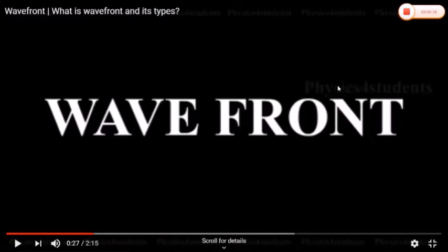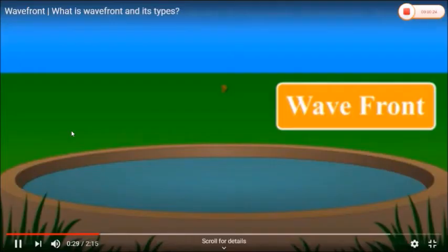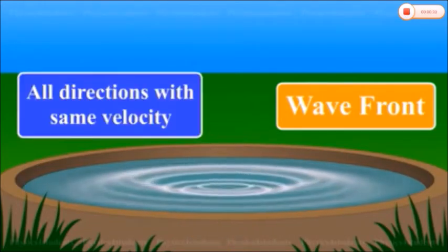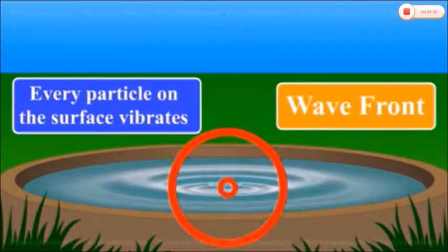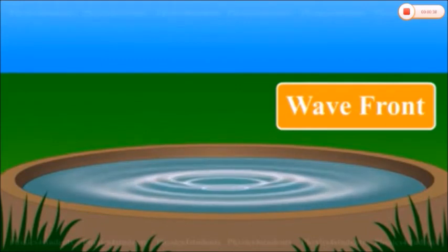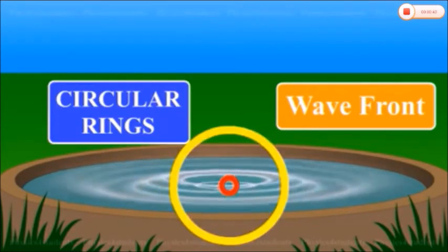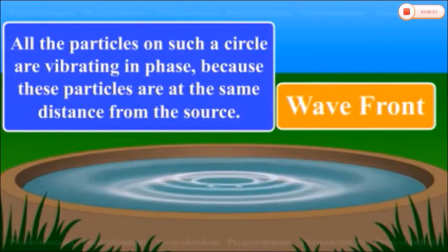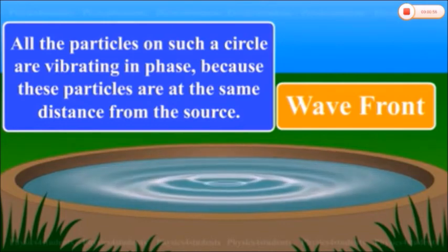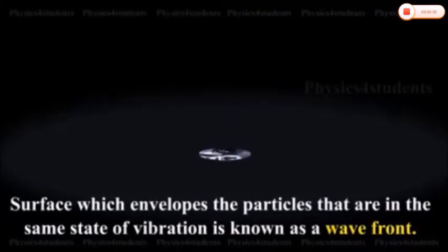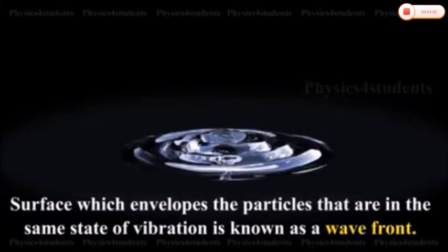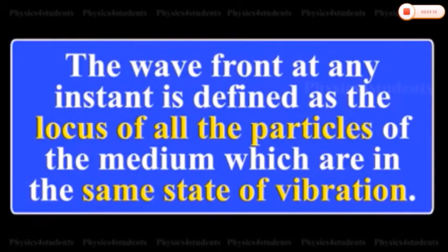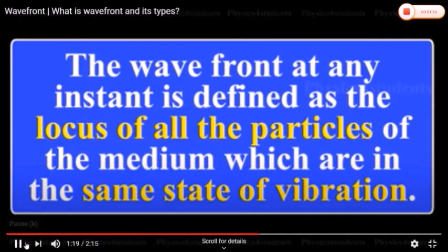When a stone is dropped in still water, waves spread along the surface of water in all directions with same velocity. Every particle on the surface vibrates. At any instant, a photograph of the surface of water could show circular rings on which the disturbance is maximum. It is clear that all the particles on such a circle are vibrating in phase because these particles are at the same distance from the source. Such a surface which envelops the particles that are in the same state of vibration is known as a wavefront. The wavefront at any instant is defined as the locus of all the particles of the medium which are in the same state of vibration.